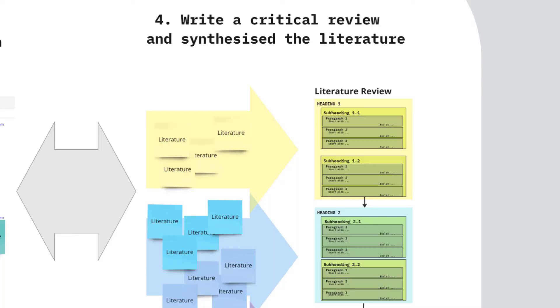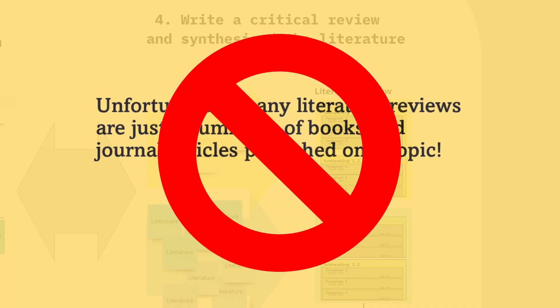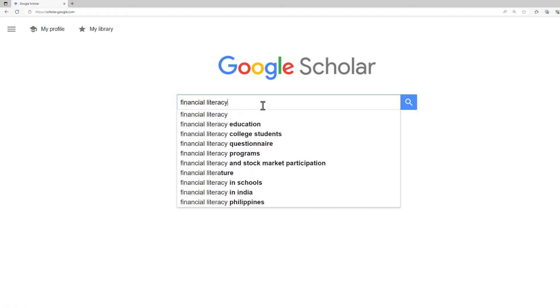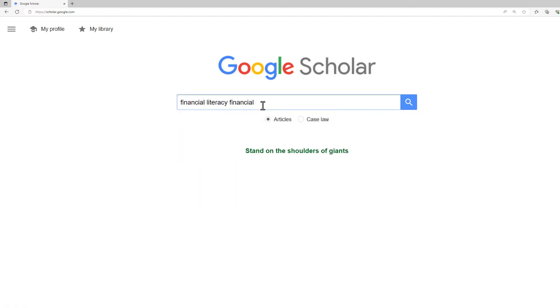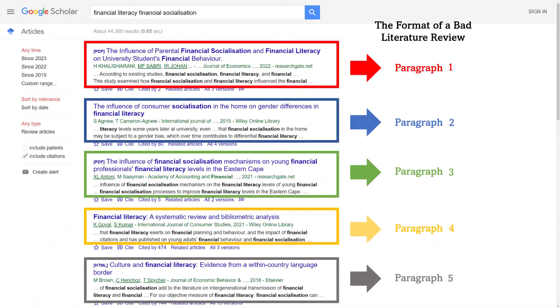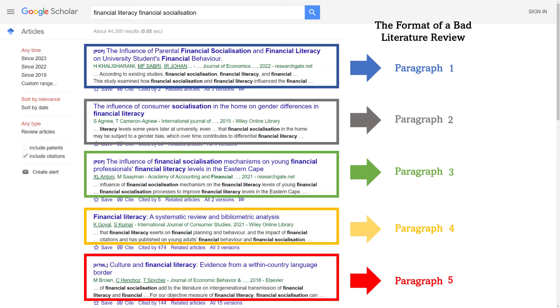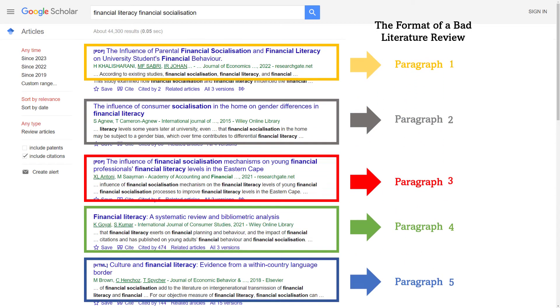Step 4 — write a critical review. Unfortunately, many literature reviews are just a summary of books and journal articles published on a topic. When I read such literature reviews, I feel I'm looking at the results page of Google Scholar, or maybe a shopping list — where you searched for your keywords, reviewed the Google Scholar results one by one, and reported each of them in one paragraph. Some researchers arrange the order chronologically, or alphabetically, or from broader to more related to the topic. However, what you need to do is a critical review.